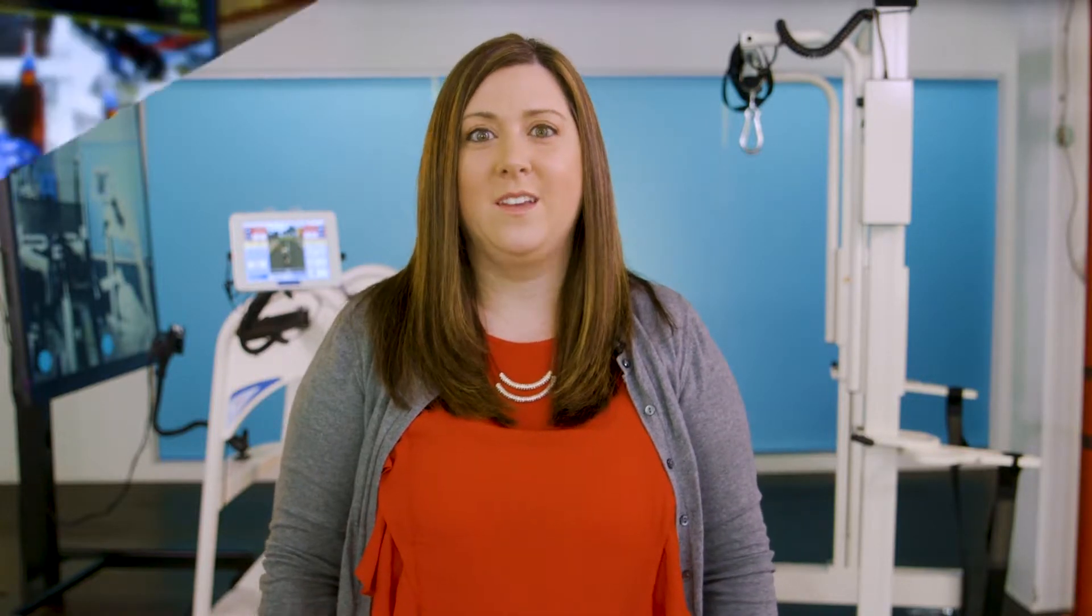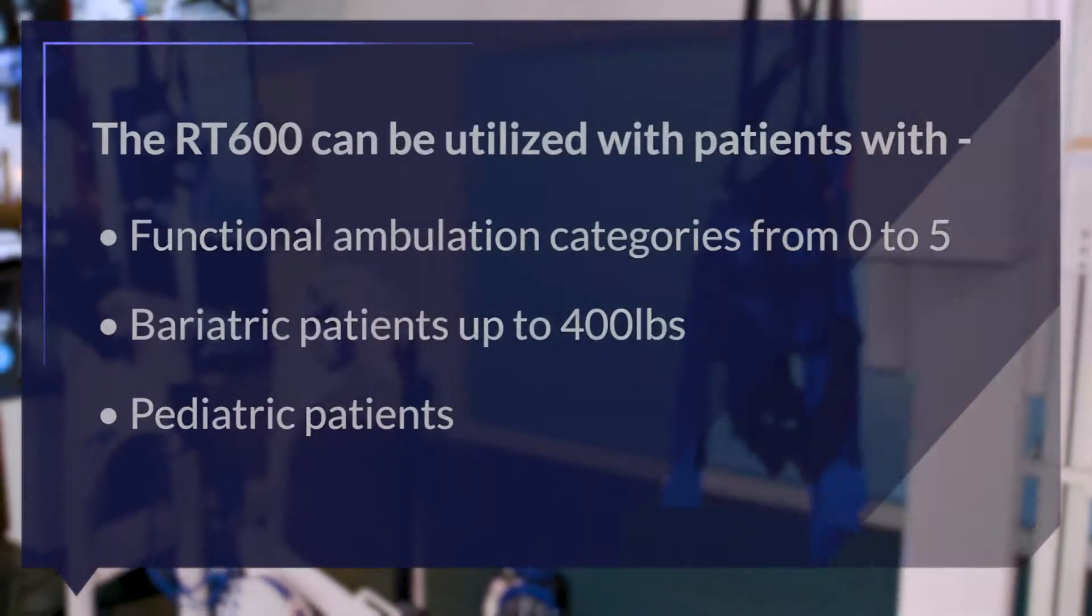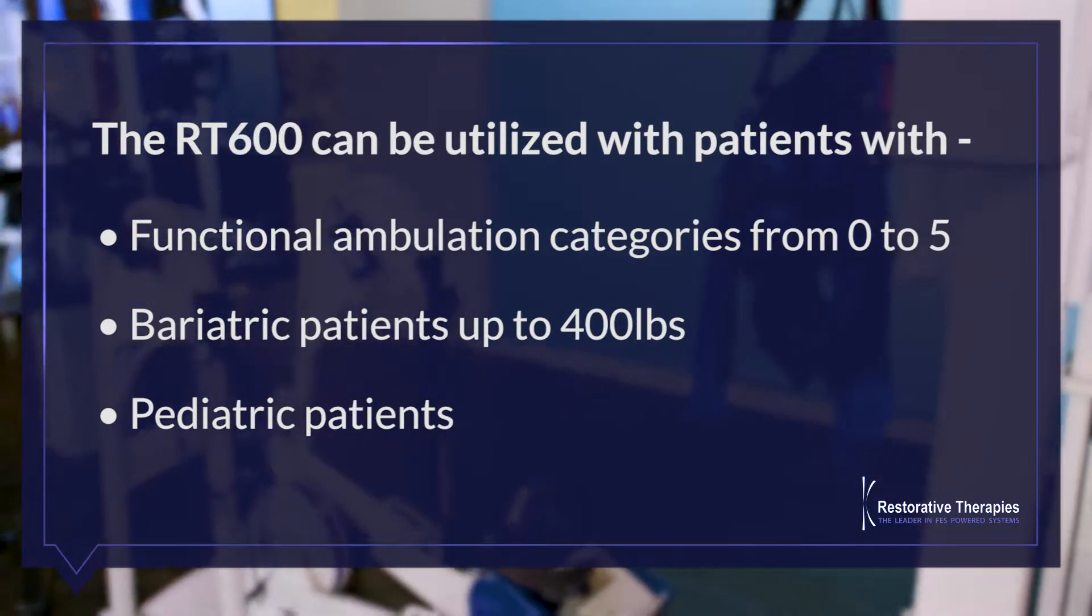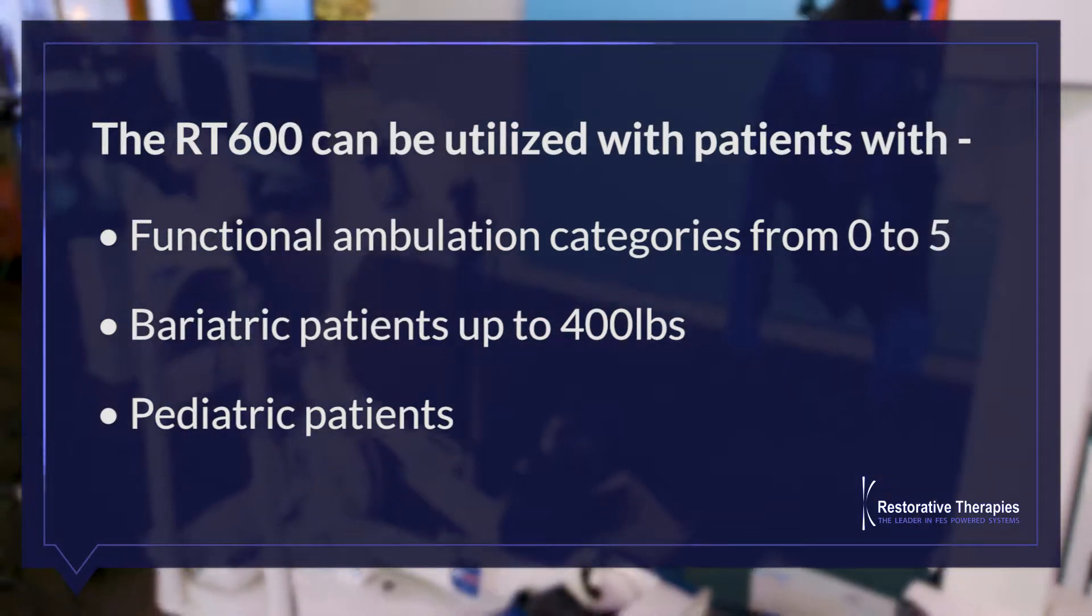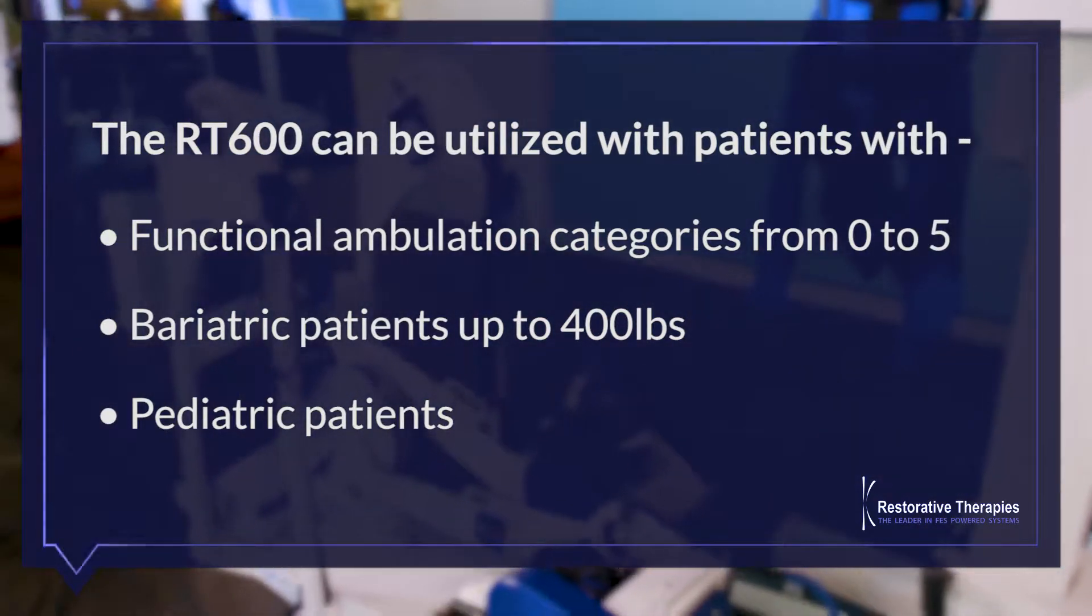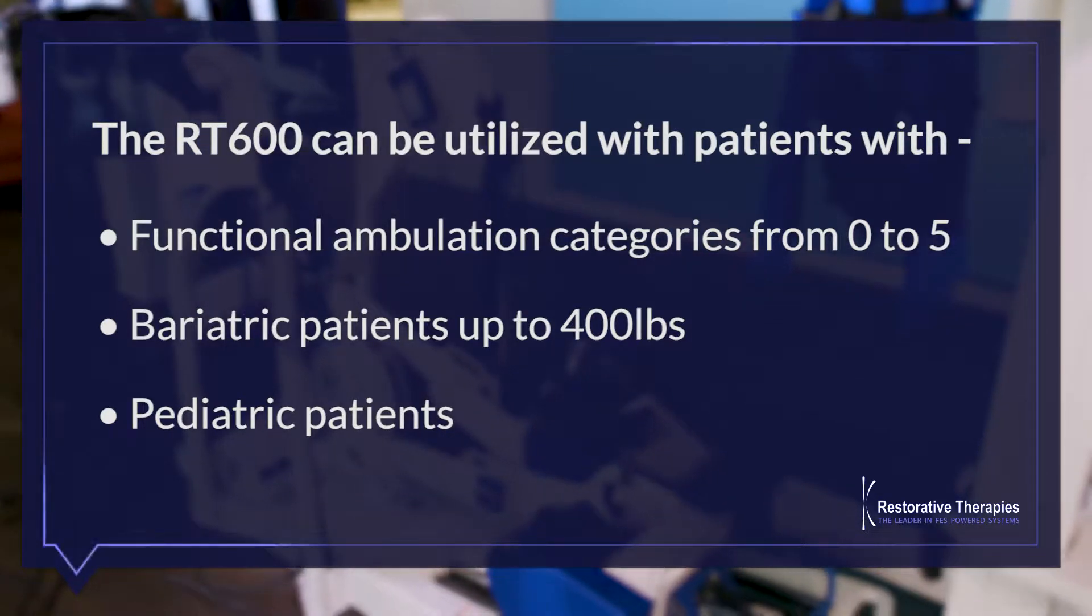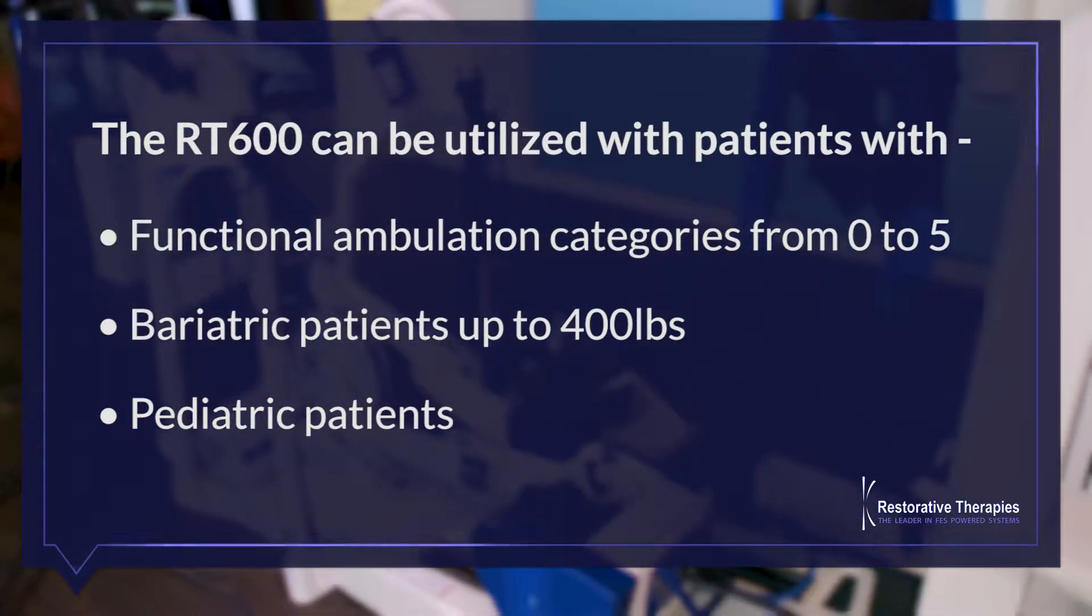The RT600 is cutting-edge technology which accommodates a broad scope of patients and can be utilized across the continuum of care with numerous neurological conditions. The RT600 can be utilized with patients within functional ambulation categories from zero to five, with bariatric patients up to 400 pounds, as well as pediatric patients.